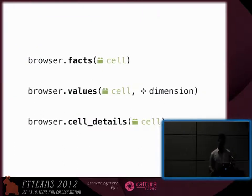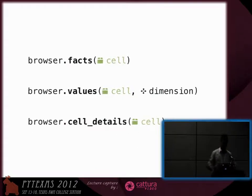There is much more. You can get the details within the cell — you can get the facts, you can get the values of a certain dimension, and you can also describe the cell to create the multidimensional breadcrumbs I was mentioning before.